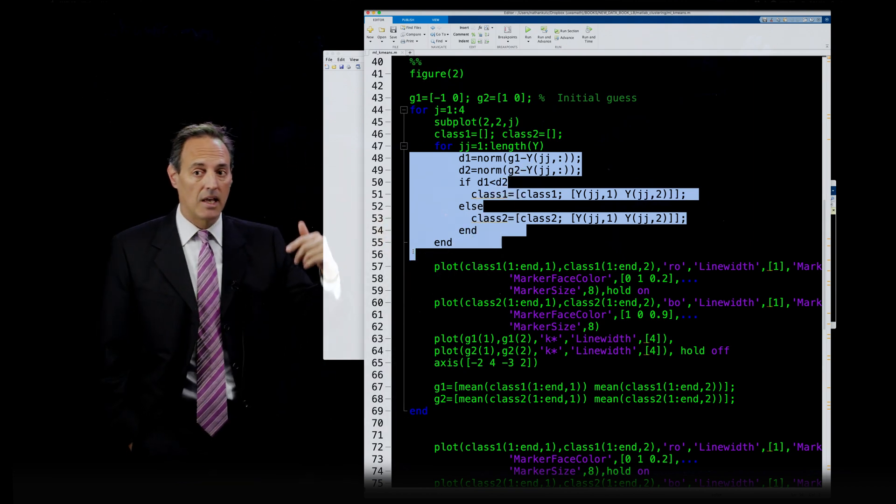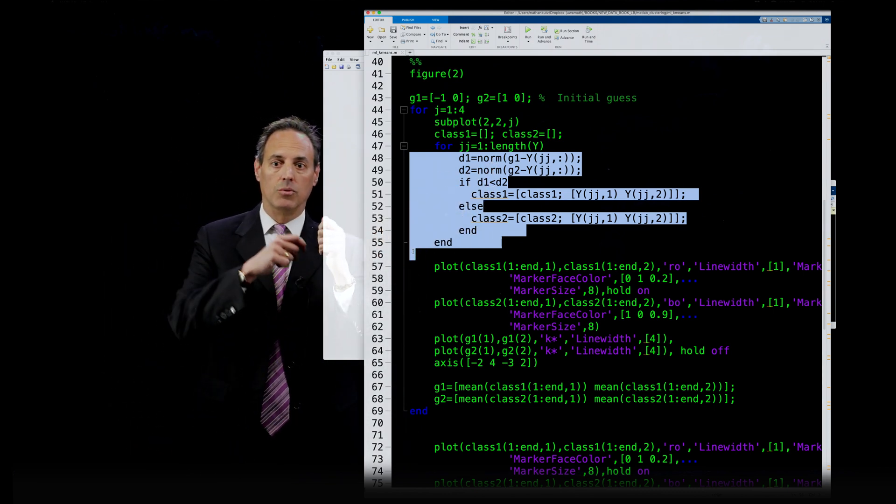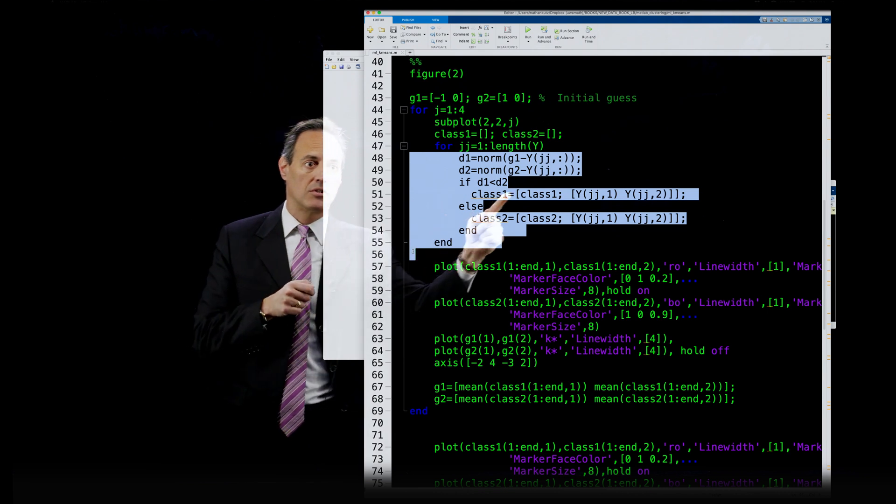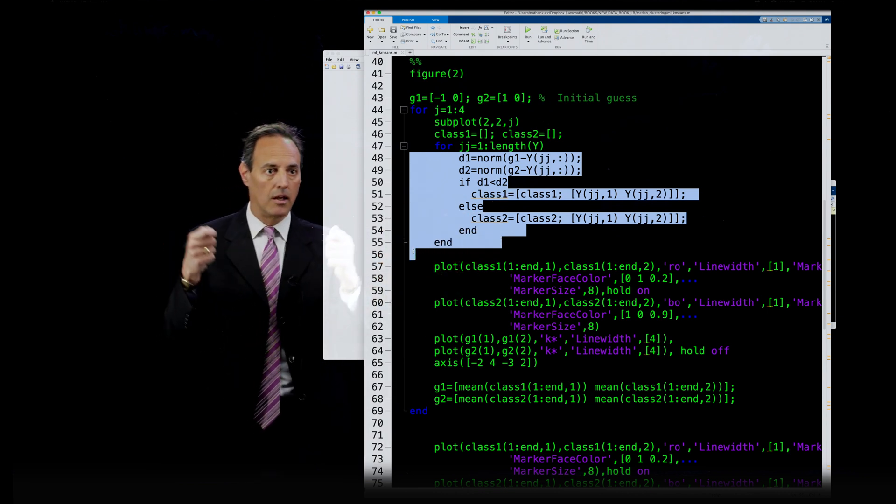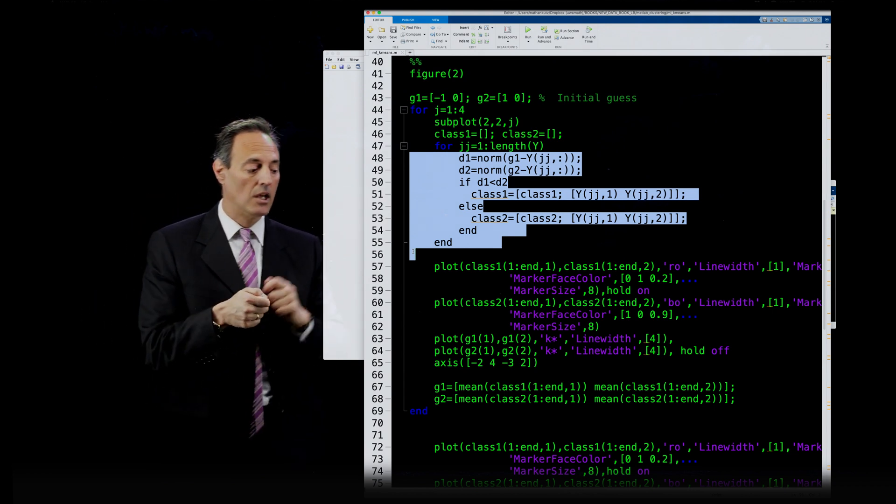I'm going to look at how close I am to G1 through all my data. So, I'm going to go through all the data and ask, what's the distance of a new data point to G1? What's the distance to G2? So, I'm just going to say, there are these two distances.